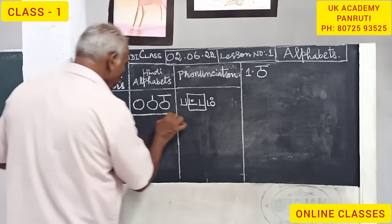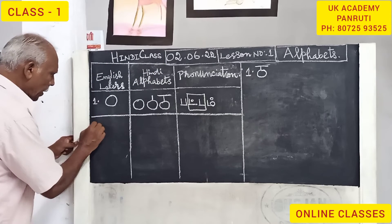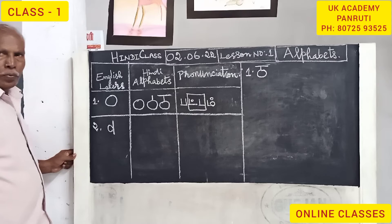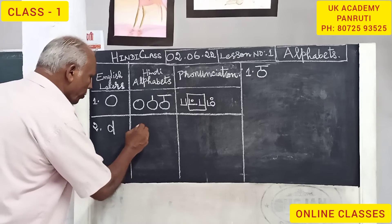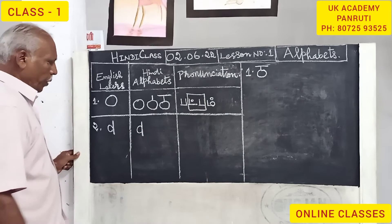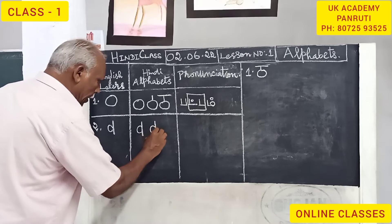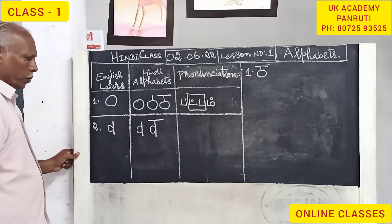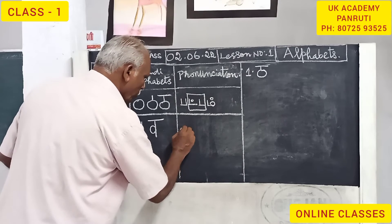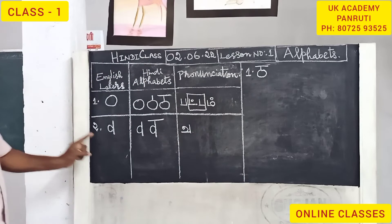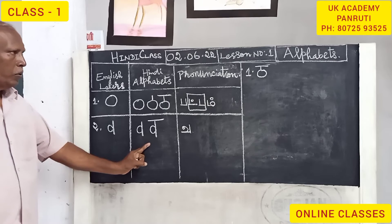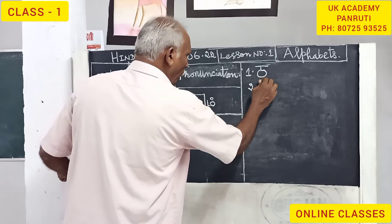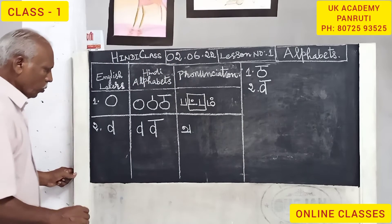Now let us learn some other letters. Write English small letter d here. The same way you write it for Hindi — step one, step two. Write English letter d and draw the upper line. I will repeatedly say: the upper line should be drawn last. This letter is called Va. From d, we have learnt the Hindi letter Va. We have to draw like this, then on the last step draw the upper line — that is very important.